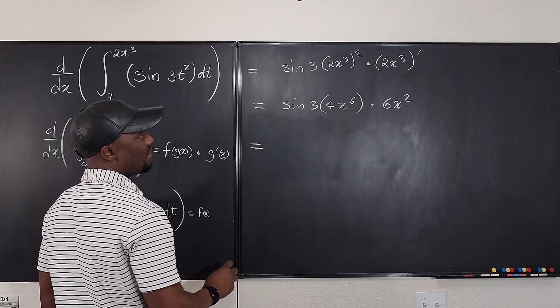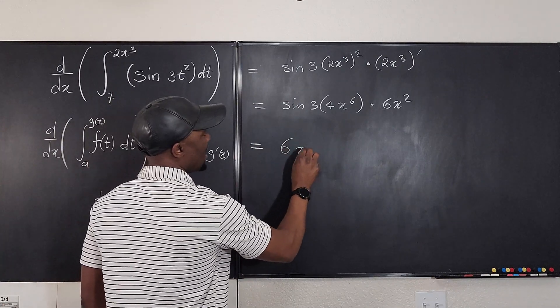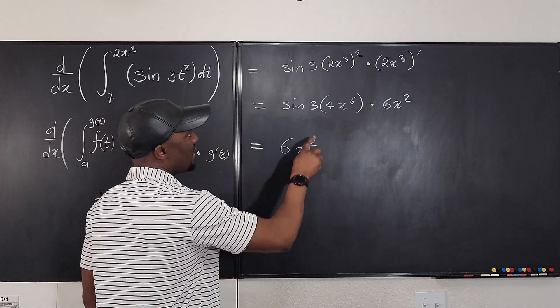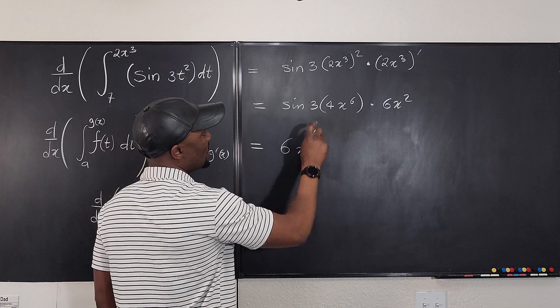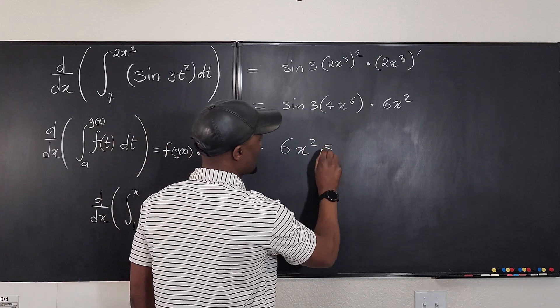Now we multiply this by this. Our final answer is going to be 6x squared, and then we distribute what's in here. What do we get? We get 6x squared sine 12x to the sixth. Interesting, and that's what you get.